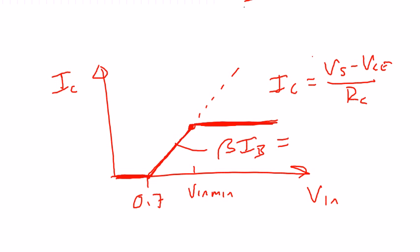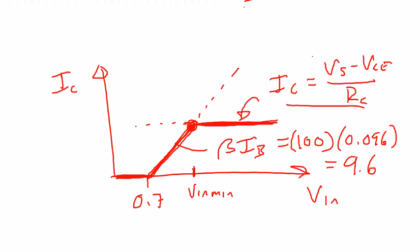Now beta in this case is 100, and IB was 0.096 milliamps, which also ends up giving us that 9.6 milliamps. So you can see at the minimum saturation voltage, both equations happen to be true because that's the point that both these equations meet right here. So we could have calculated that in two ways. In the notes, I've only shown you this way, however, using this part of the curve.